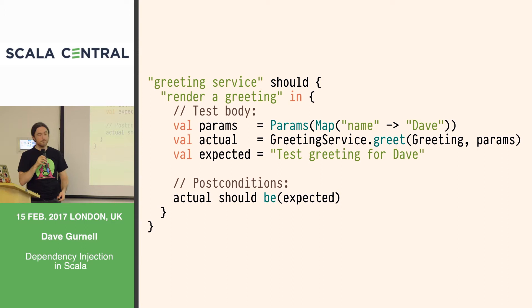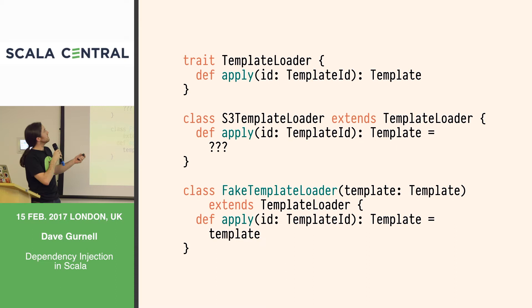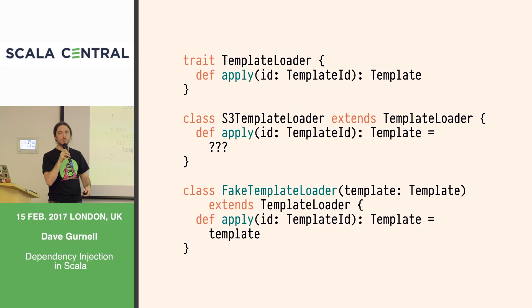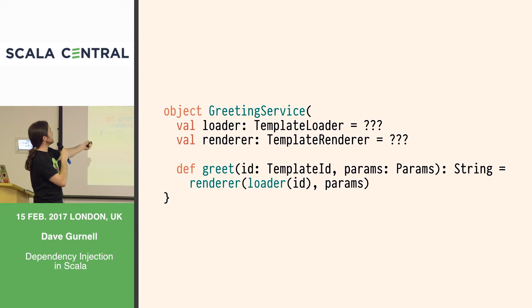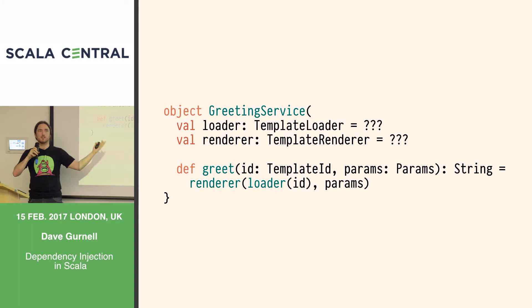Let's look at different implementations of template loader. We can turn it into a trait and subclass it twice. We have our S3TemplateLoader which gets templates from S3, and then we can use a FakeTemplateLoader in our tests — we just give it a template and say, no matter what anyone asks, always return this template. And all the dependency injection techniques we're going to look at are basically ways of taking these two references and making them swappable.